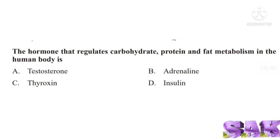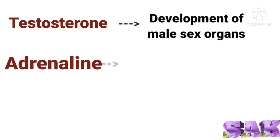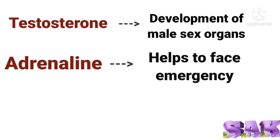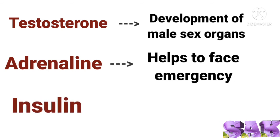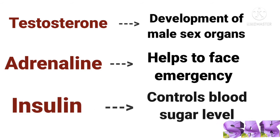Next question is the hormone that regulates carbohydrate, protein and fat metabolism in the human body. Hormone that controls metabolism is thyroxin, so correct answer is option C. Let us learn the functions of other hormones given here: testosterone for development of male sex organs, adrenaline helps to face emergency, insulin controls blood sugar level.